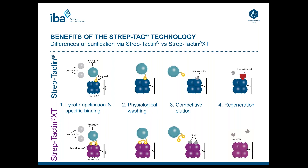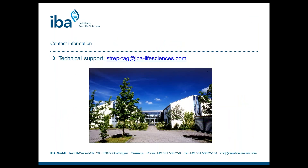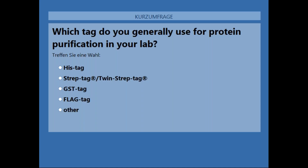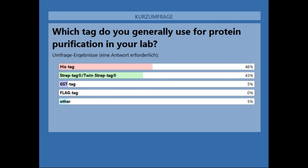And with this I'm already at the end of my presentation. Feel free for any questions or technical help to contact our technical support. I have one last question to the audience: which tag are you generally using in your lab for protein purification? Nearly 50% use the HIS tag versus 43% which use the Streptactin XT as a default purification system — which looks pretty good that already 43% are using the system. And there are a few more using the GST tag or other tags. Maybe we'll hear from each other again.